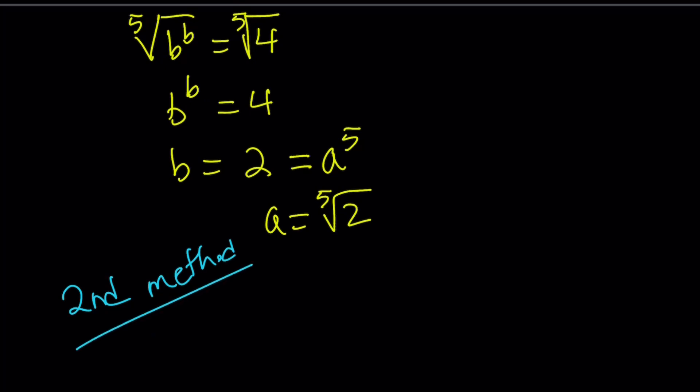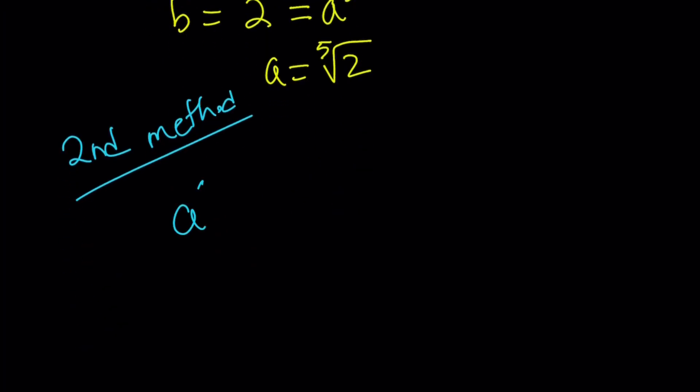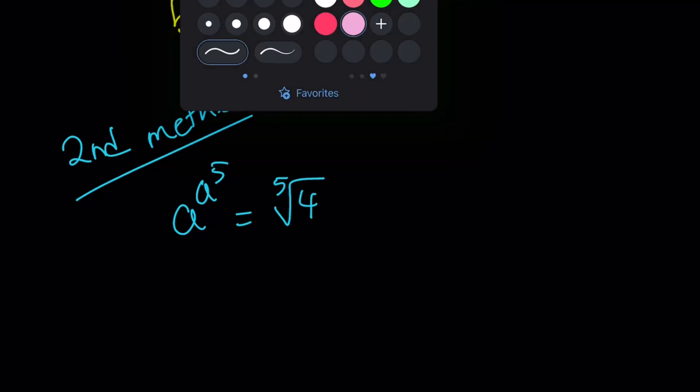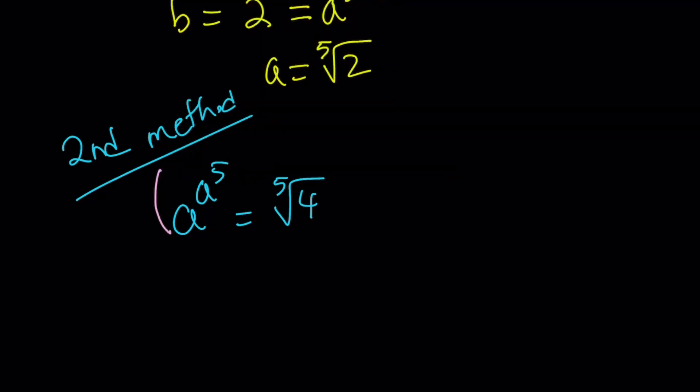For our second method, we're going to do the following. Let me rewrite the problem. a^(a^5) = ⁵√4. We're going to use a trick here. These methods are, by the way, very similar, but just slightly different. For this one, I'm going to raise both sides to the fifth power.